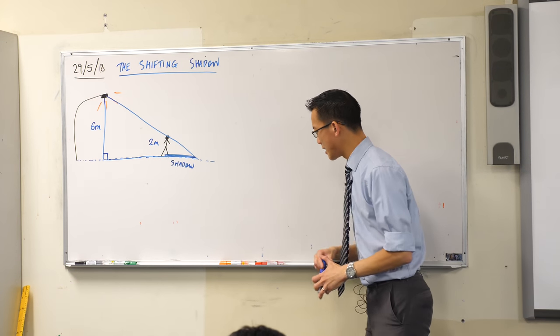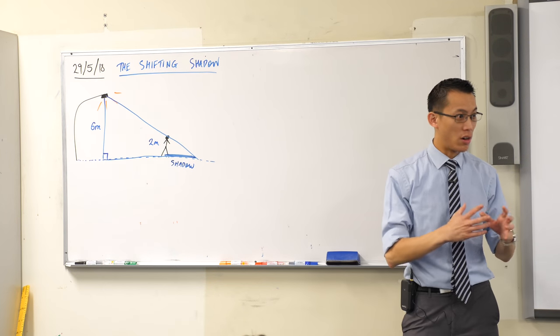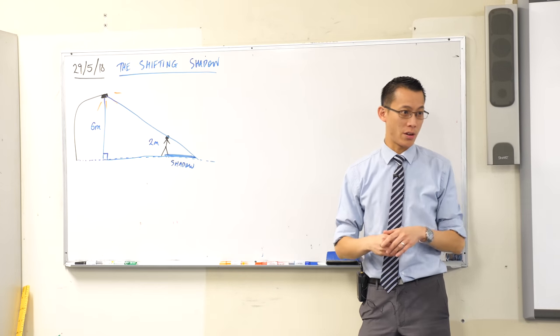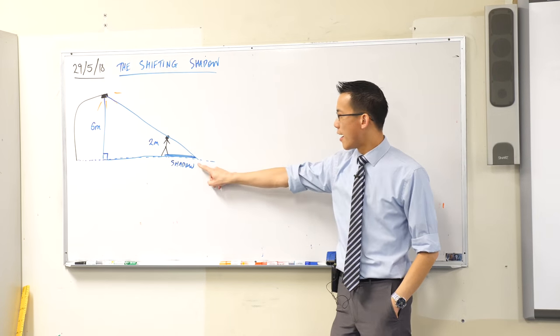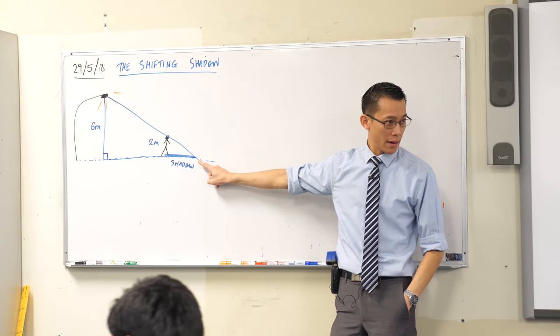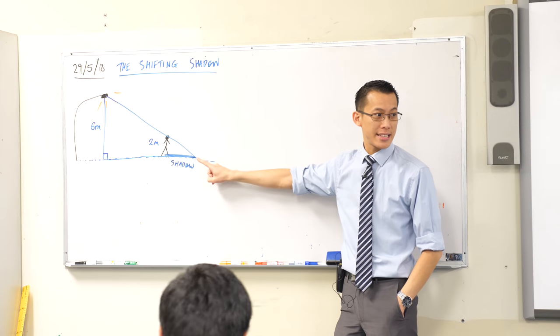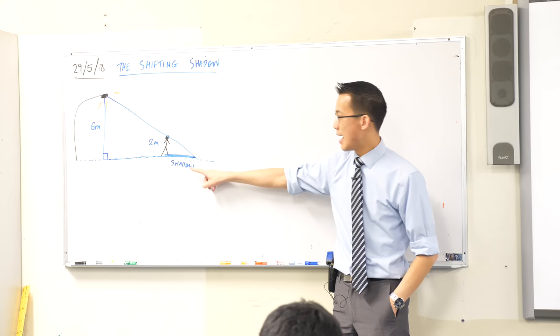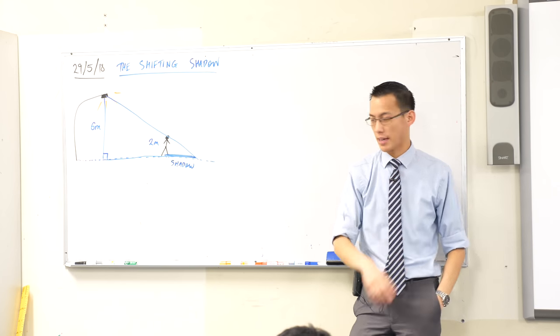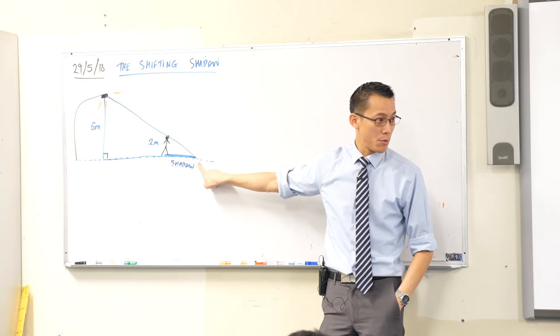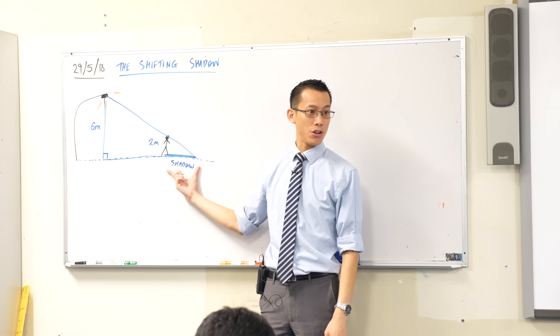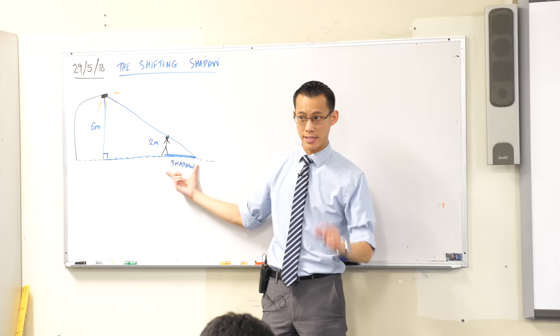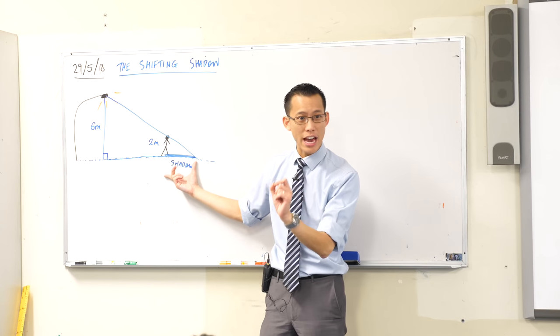Now before we actually write it down, I'm just going to state to you what's going on. There are two questions we're going to ask of this. Number one, how fast is, here's the tip of the shadow, right? Here's the edge. How fast is the tip of the shadow moving? As this person walks, I'm going to tell you their speed in a second. How fast is that moving? And secondly, how fast is the shadow growing? Let me say that again. How fast is the shadow growing?